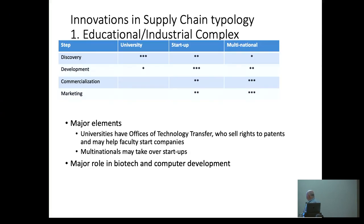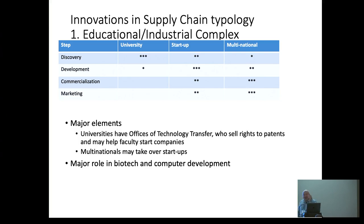If you look at the innovation supply chain, you have several stages: discovery, development, commercialization, and marketing. You have a division of labor between universities, startups, and multinationals. In countries that don't have these things — to some extent many developing countries — it's really problematic.